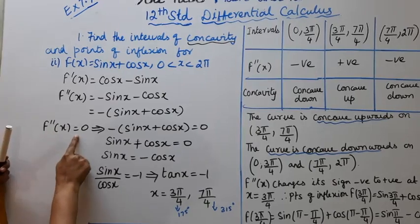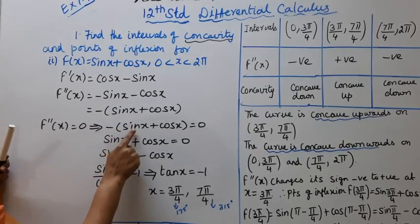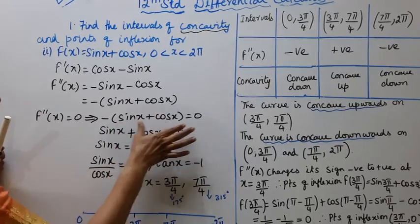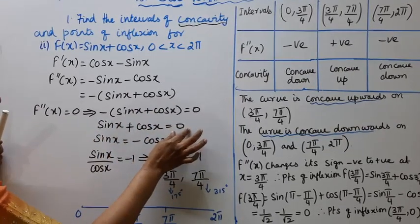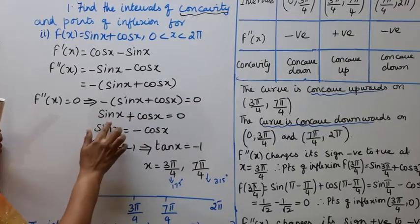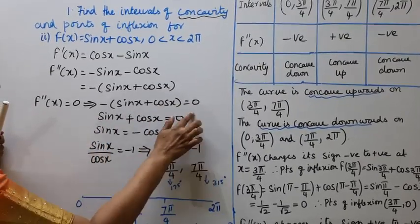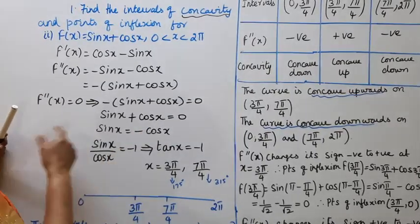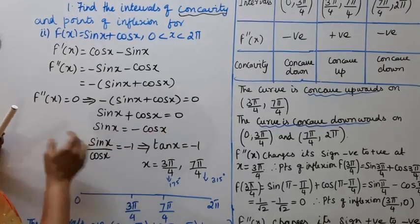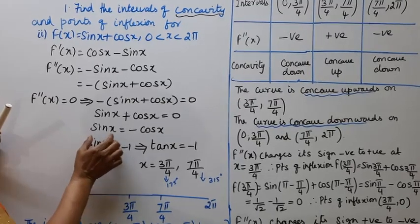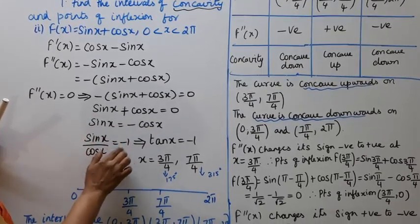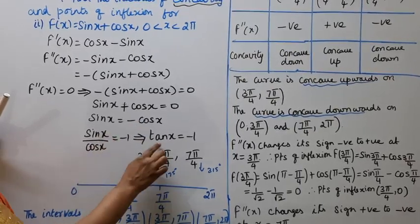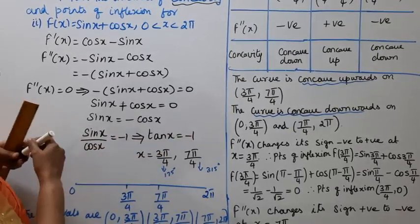Setting f double dash of x = 0: minus sin x plus cos x = 0. Dividing by minus 1 gives sin x + cos x = 0, so sin x = minus cos x. Dividing both sides by cos x gives sin x over cos x = tan x = minus 1. We know tan x = 1 when x = π/4, so here tan x = minus 1.